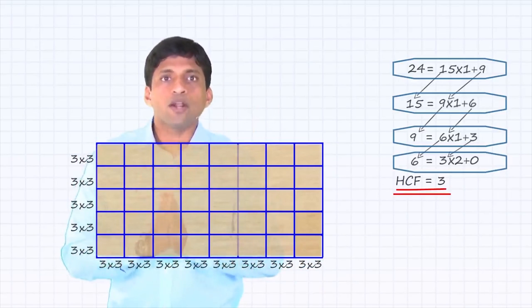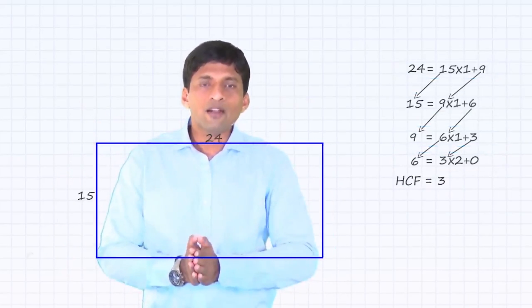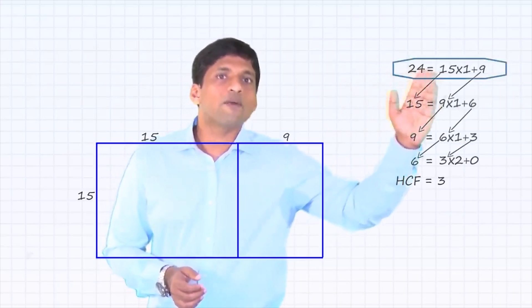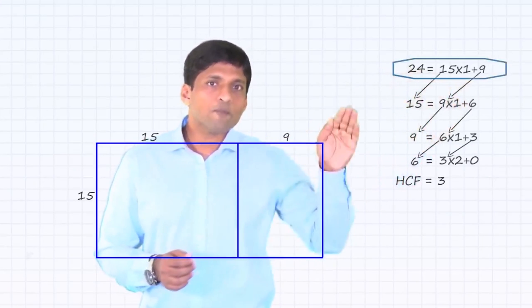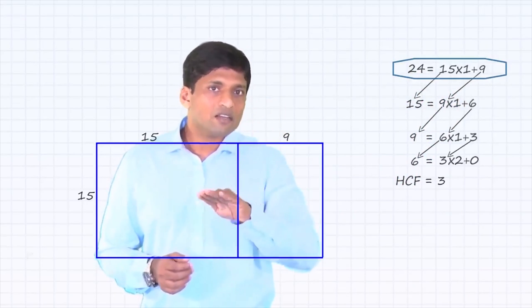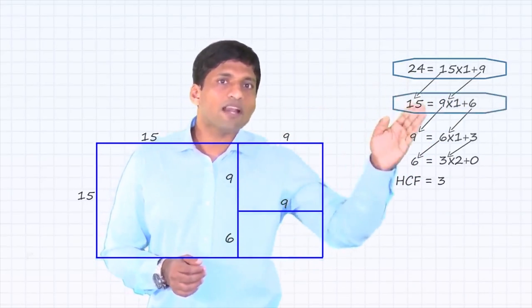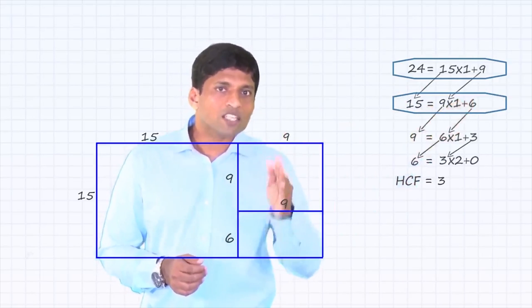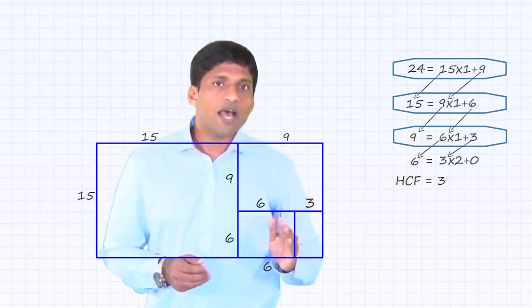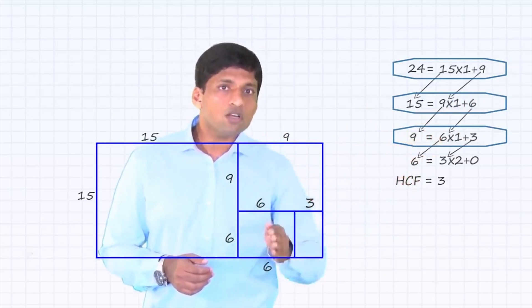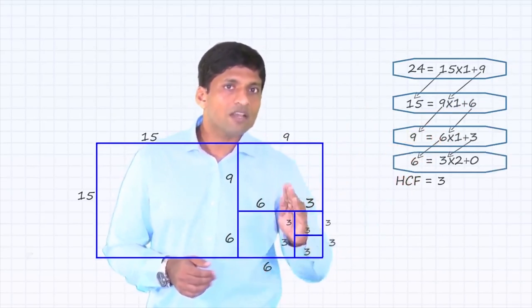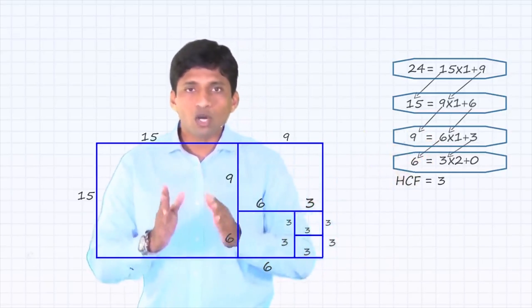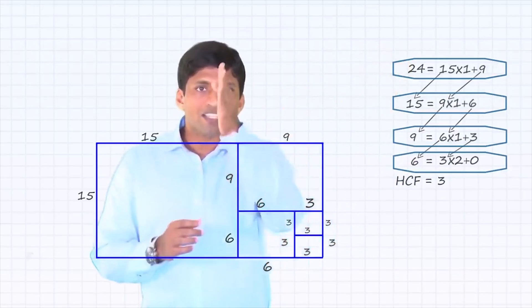If you do a step-by-step comparison: initially a 24 by 15 rectangle, the first cut is 15 — that is step 1, where the quotient is 1 and the remainder is 9. The second step: from the 15 by 9 rectangle, I can cut 9 — that's the second division, 15 by 9, quotient 1, remainder 6. Next, from a 9 by 6, I take out a 6 by 6 square — that's the third cut, or third division. The last step is the 6 by 3 division, where the remainder is 0: this 6 by 3 rectangle becomes two 3 by 3 squares and nothing is left out. That is why 3 by 3 is the answer.